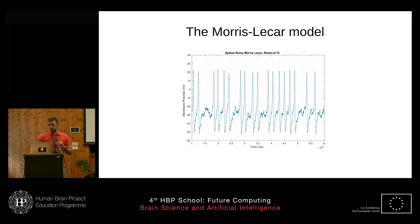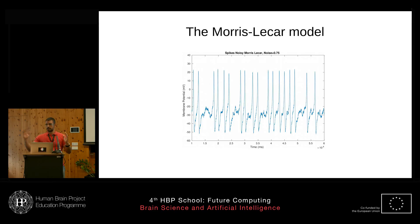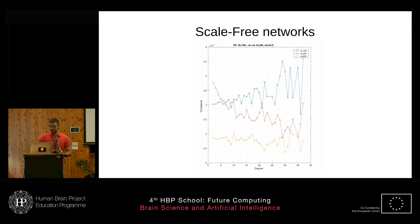We impose a biologically flexible threshold, and whenever the potential of the neuron reaches that threshold we record the time. After we finish the simulation, we take the differences of these times to calculate the interspike interval.